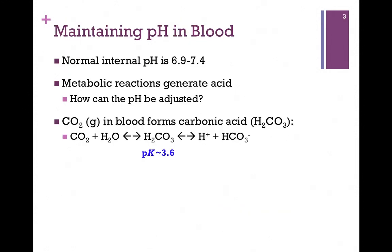Now we want to look at one of the most important buffering systems in the human body, used to maintain pH homeostasis in blood. Our normal internal pH hovers around 7, from 6.9 to 7.4. Keep in mind this is a log scale. Our problem is that in carrying out normal metabolic functions we generate acid, so the question is how do we adjust the pH back to this neutral range?